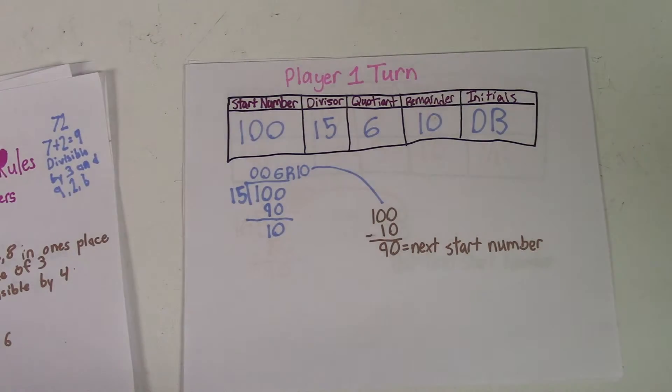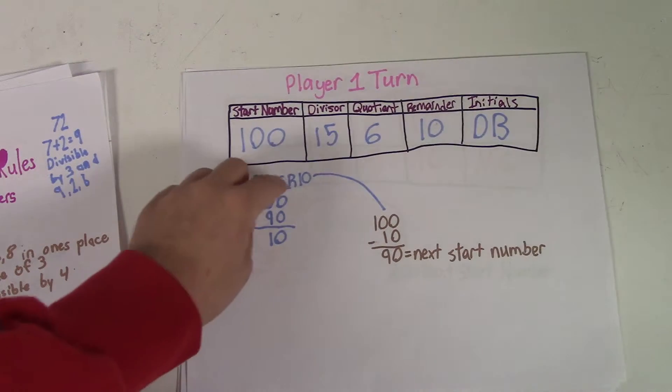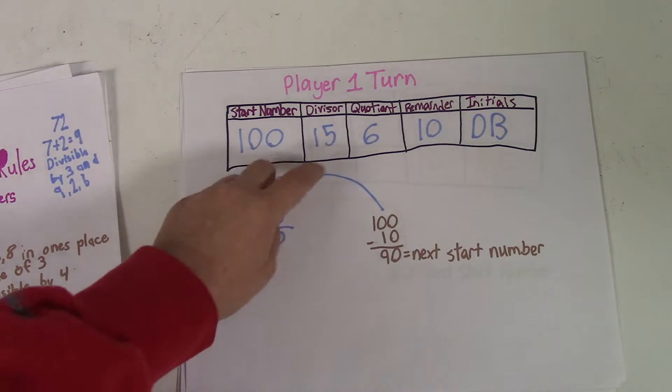Now we're going to show you an example of how to play. I'm going to be player 1 and once you start out, you always have the start number of 100. So I'm just going to pick the divisor of 15.